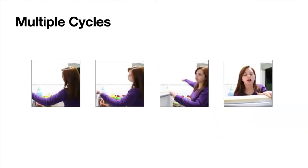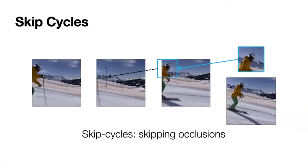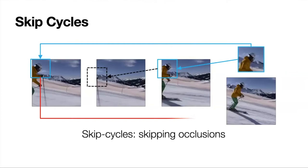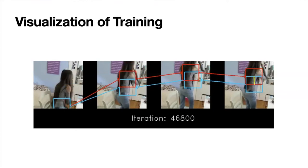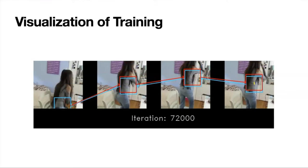Besides long cycles, we also design shorter cycles that provide easier tasks, supporting learning at the beginning of training when features are not yet stable. We also design cycles that can skip frames to address occlusions. During training, we combine all different cycles together. As the cycle becomes more and more consistent, the tracking results get better and better.